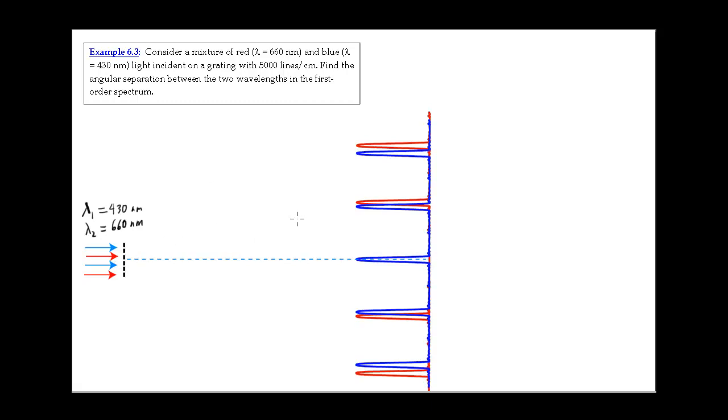But when we move away from theta equals zero and go to the larger angles, we see that for first order, and that's what this first set of peaks represents, for n equals 1, the red and the blue have been separated. For n equals 2, they get separated even more, and so on. The central peak, of course, represents n equals zero in the diffraction grating equation.